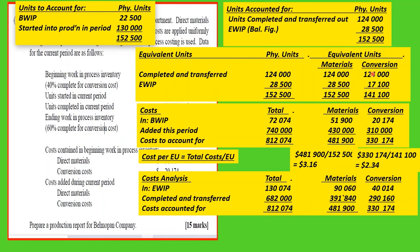For ending WIP conversion: 17,100 equivalent units multiplied by $2.34 equals $40,014. For completed and transferred units: 124,000 multiplied by $3.16, plus 124,000 multiplied by $2.34. Adding across and down, the total should equal the cost to account for of $812,074. If it does not, we have not correctly accounted for all costs.